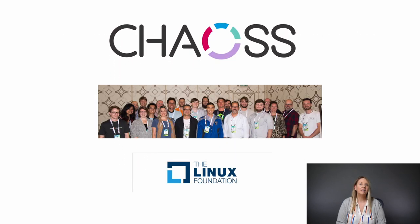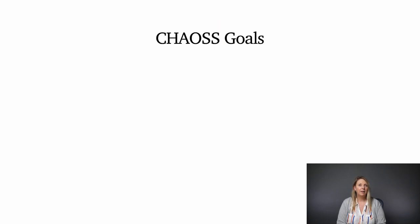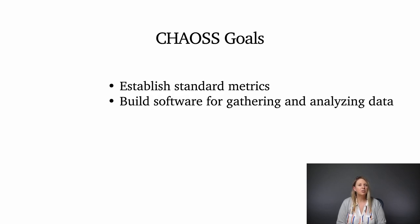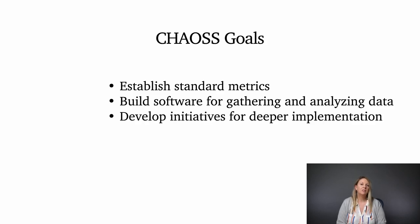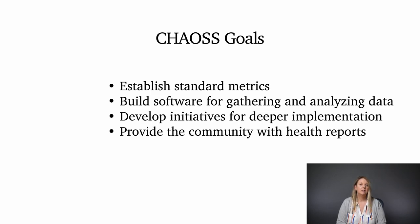The KAOS project is part of the Linux Foundation and was officially launched in September of 2017, bringing together people and technologies from both industry and academe. The goals of KAOS are to first establish standard implementation-agnostic metrics for understanding community health, produce integrated open source software for analyzing community development, develop initiatives for the deployment of metrics not attainable through online trace data, and build reproducible project health reports.